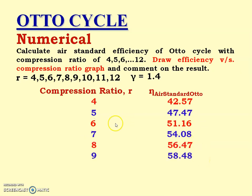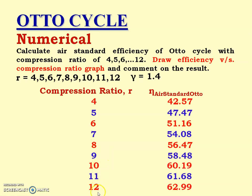Similarly for R values of 8, 9, 10, 11, and 12, we are required to calculate the efficiency. We have calculated the air standard efficiency of the Otto cycle with compression ratios from 4 to 12. These are the efficiencies for all the cases.